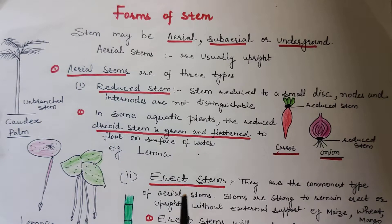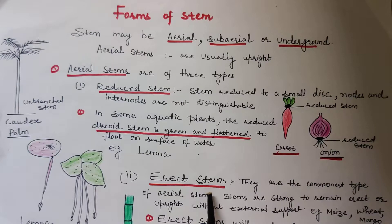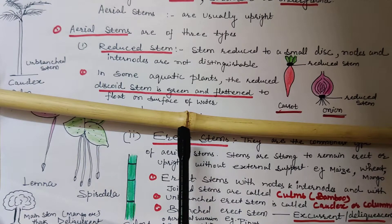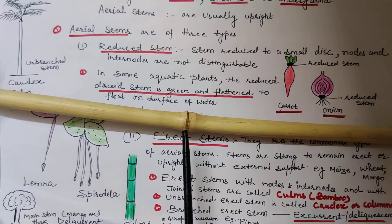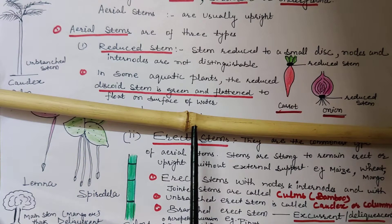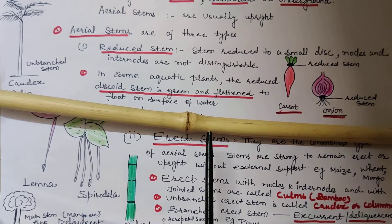The second type of aerial stem is erect stem — it is the commonest type. These stems are strong enough to remain erect or upright without any external support. Examples are maize, wheat, mango, etc. If an erect stem has distinct nodes and internodes, with the nodes getting swollen and giving the stem a jointed appearance, such a stem is called a culm. Example is bamboo, where you can clearly see the nodes and internodes.